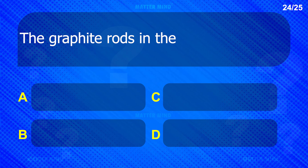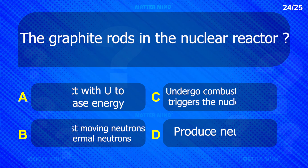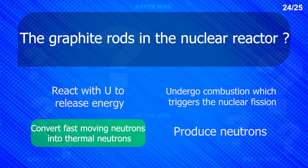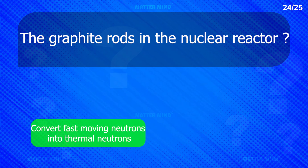The graphite rods in the nuclear reactor convert fast moving neutrons into thermal neutrons.